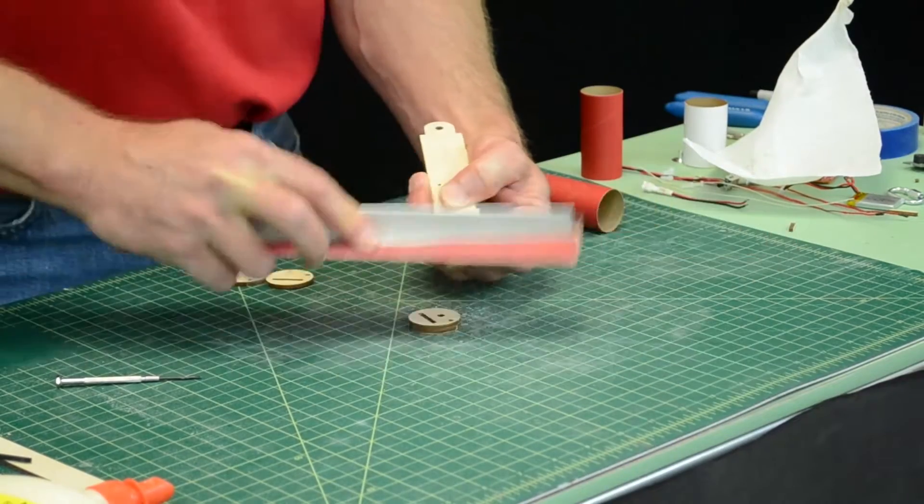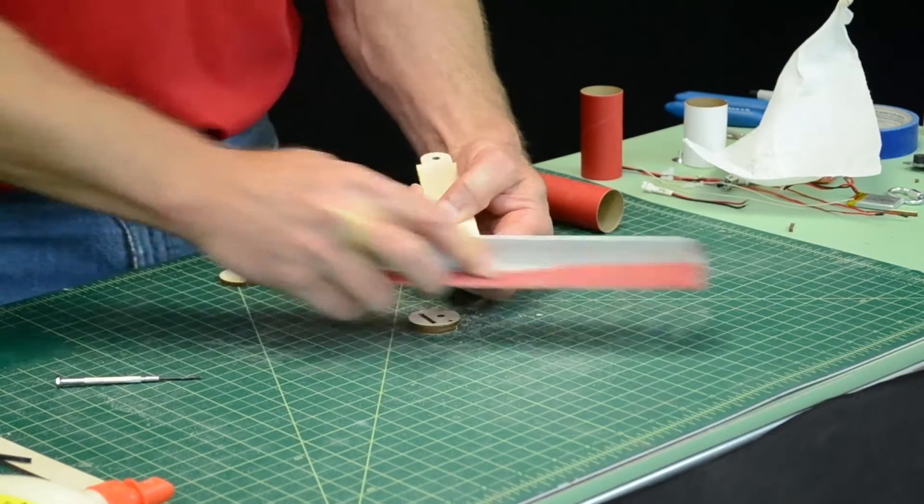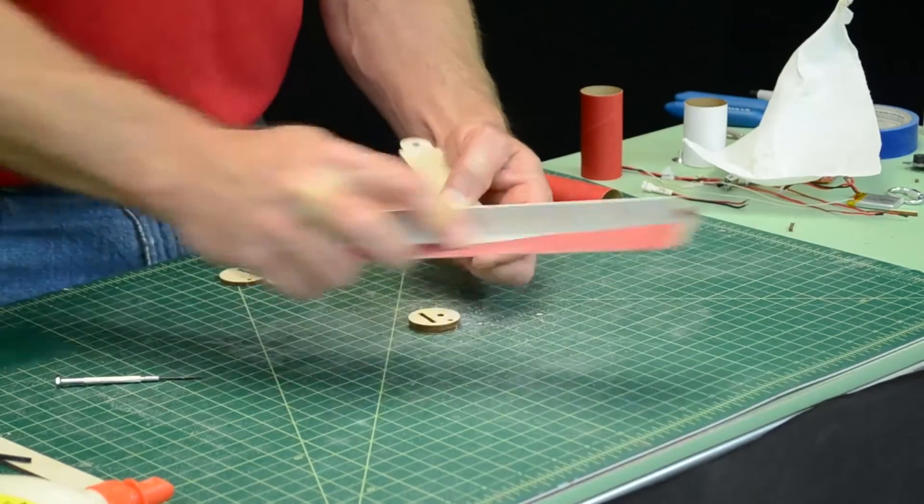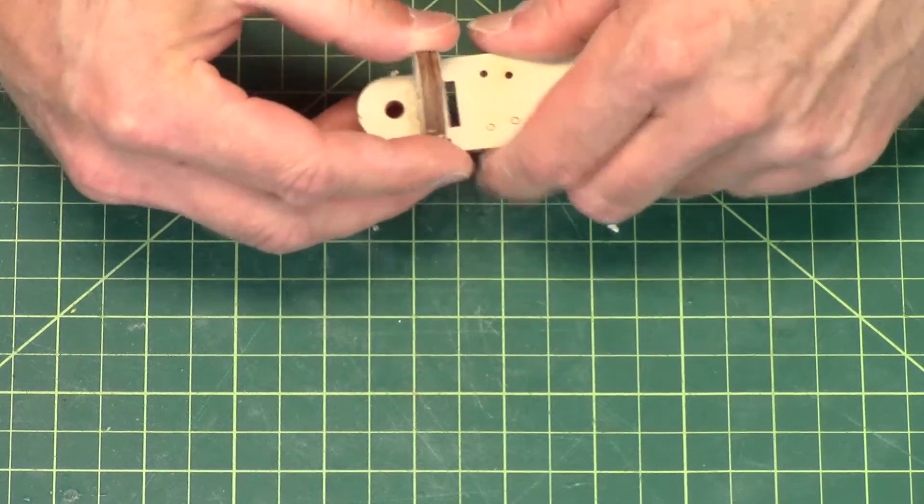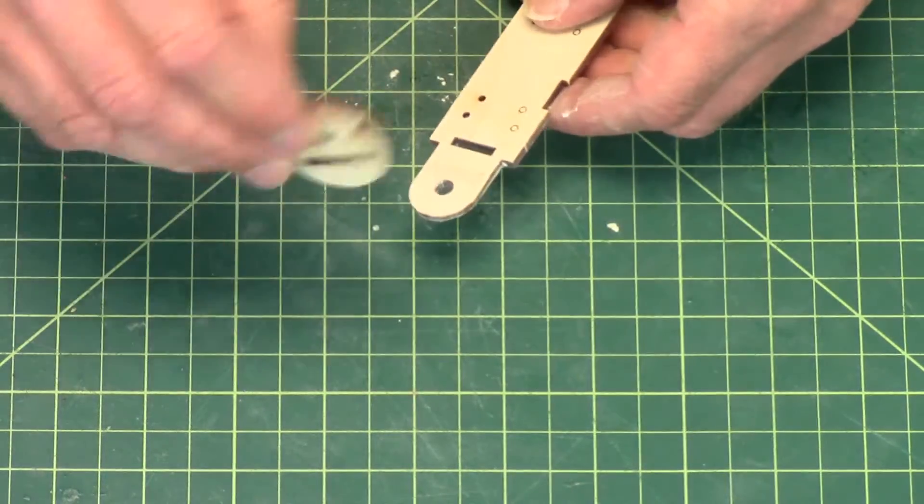Clean that surface off. Make sure that there's no glue on it. That's much better. So that's A1 and A2.